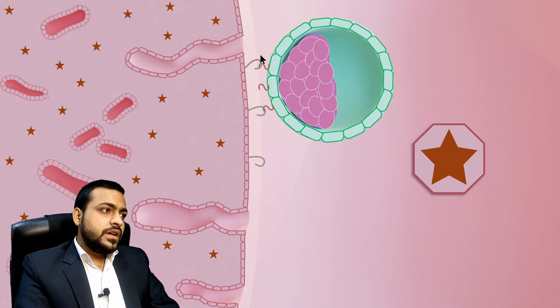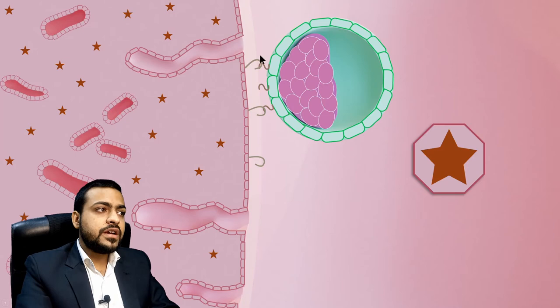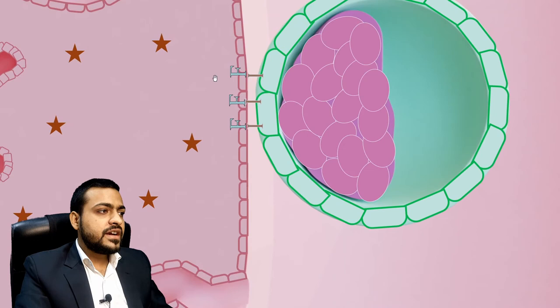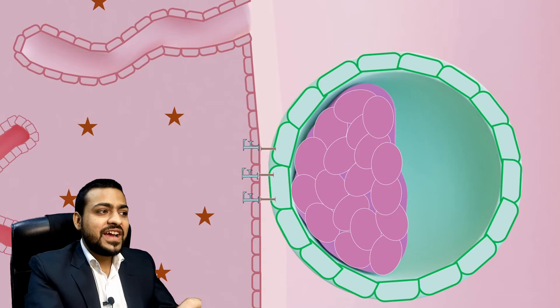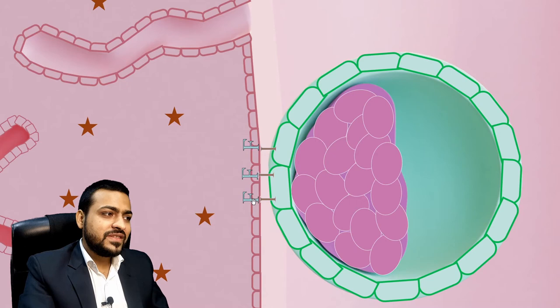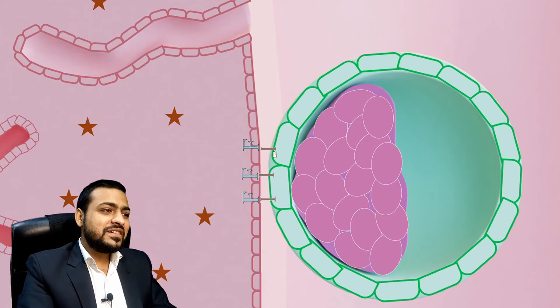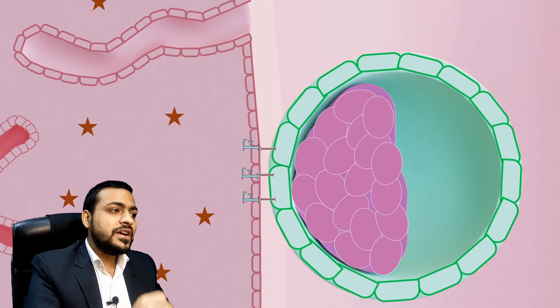The initial loose attachment of the embryo with the endometrium is mediated by selectins, and then there is a tight attachment where the embryo really integrates into the endometrial tissue by integrins. The F here is for fibronectin — the real tight attachment between the mother's endometrium and embryo is mediated by fibronectin and integrin molecules.